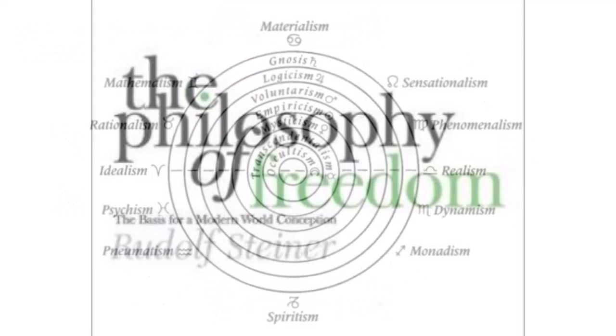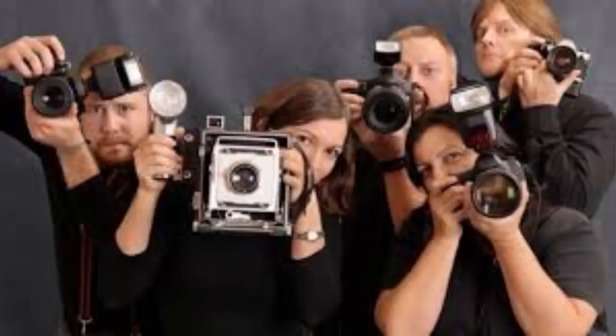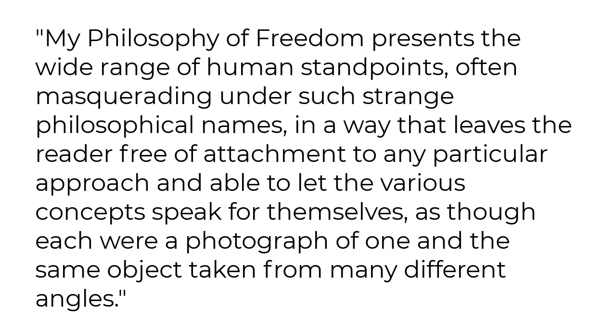Each chapter begins with an introduction to the chapter theme and then discusses that theme from twelve different perspectives, as though each were a photograph of one and the same object taken from many different angles. Steiner wrote: 'My Philosophy of Freedom presents the wide range of human standpoints, often masquerading under such strange philosophical names, in a way that leaves a reader free of attachment to any particular approach and able to let the various concepts speak for themselves, as though each were a photograph of one and the same object taken from many different angles.'